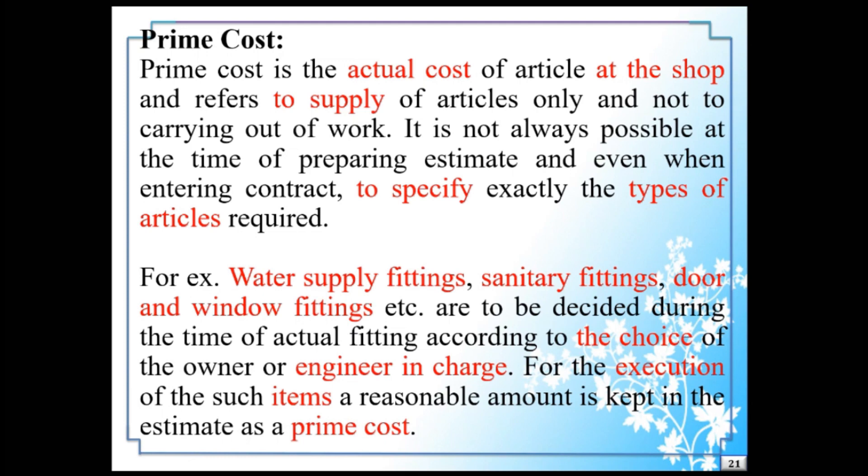So when we make estimates or even contracts, when we take some kind of articles or objects, we can't exactly specify them. So prime cost is the actual price of the article or object.